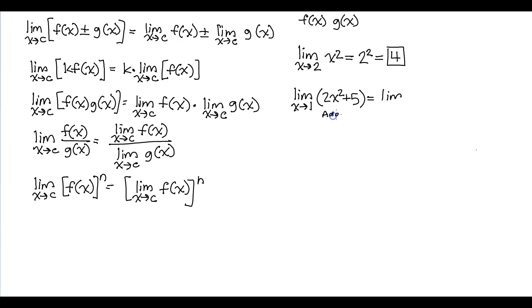This is addition, so you could separate it into the limit of this plus the limit as x approaches 1 of just 5. The limit of a constant will just be the constant—it's always 5 no matter what. We can do direct substitution for the first term. So 1 squared is 1 times 2 is 2, so we have 2 plus 5 equals 7.